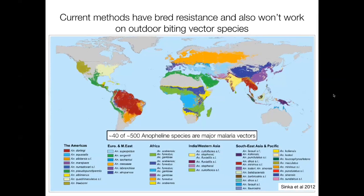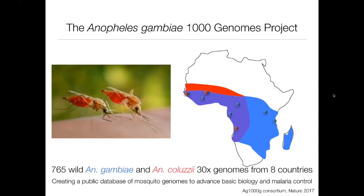The vector control measures we have primarily target species that come inside to bite people at night. The complexity of species transmitting malaria is high — many don't have those behaviors; they bite outdoors and at different times of day. It's estimated there are about 500 different Anopheles species across the world, and that's probably an underestimate. About 10 percent of these are major vectors, and among those roughly 40 mosquito species known to transmit a lot of malaria, there's a huge amount of variation in behavior.